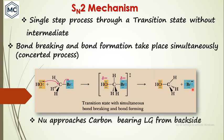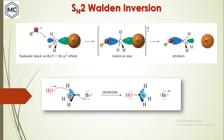In SN2 mechanism, the nucleophile approaches the carbon bearing the leaving group from the backside — this is a very important point. The backside attack takes place. It cannot approach from the front side because bromine can block it — it is a large atom. So the convenient space for attacking is the backside.